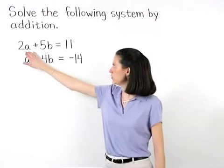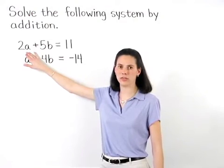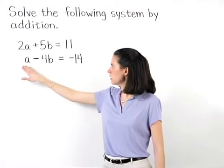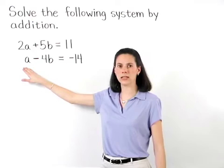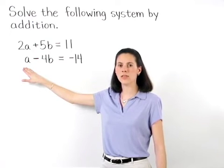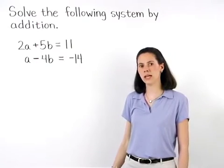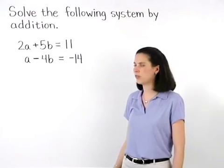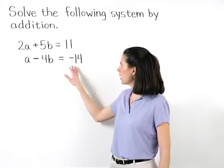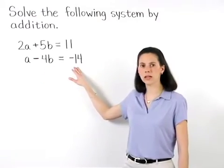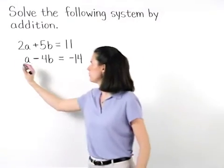Notice that we have a 2a in our first equation. Therefore, if we had a negative 2a in our second equation, then our a's would cancel out. In order to create a negative 2a in our second equation, we simply multiply both sides of our second equation by negative 2.